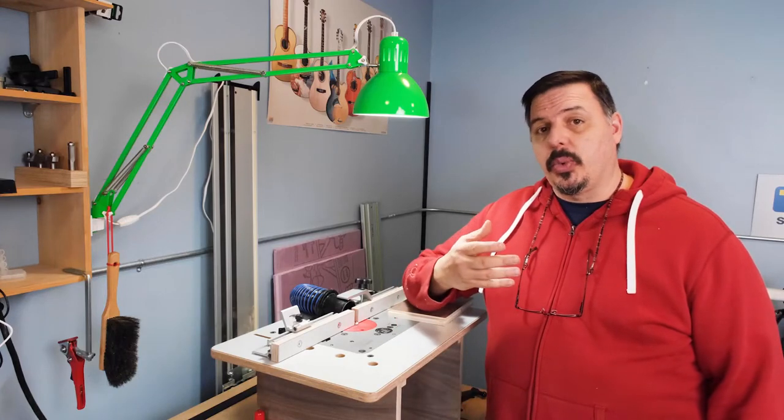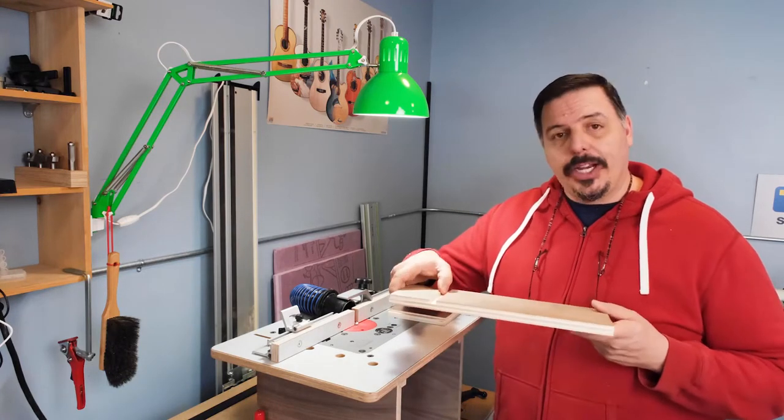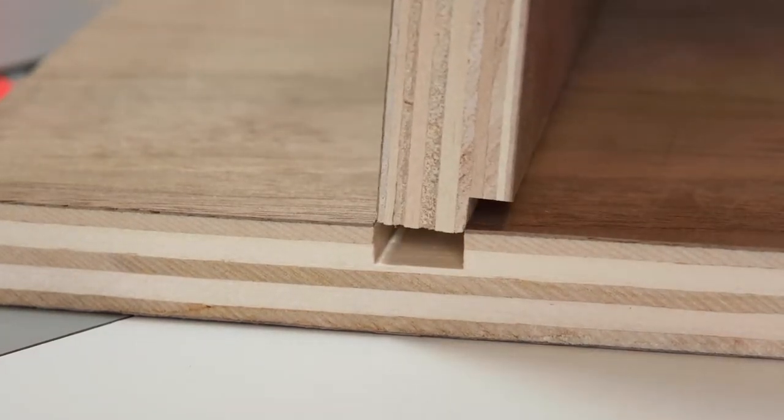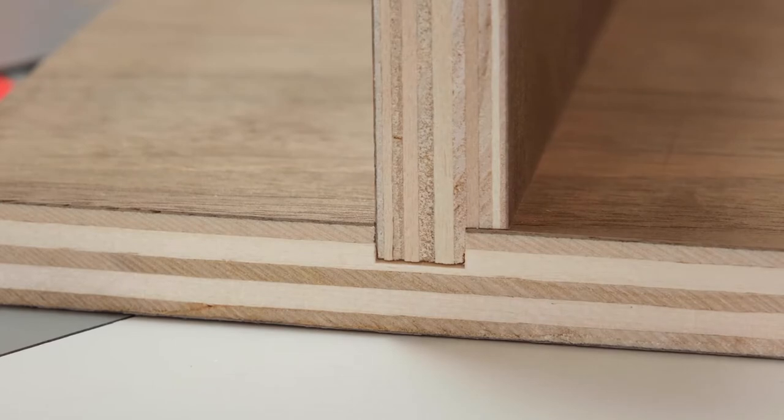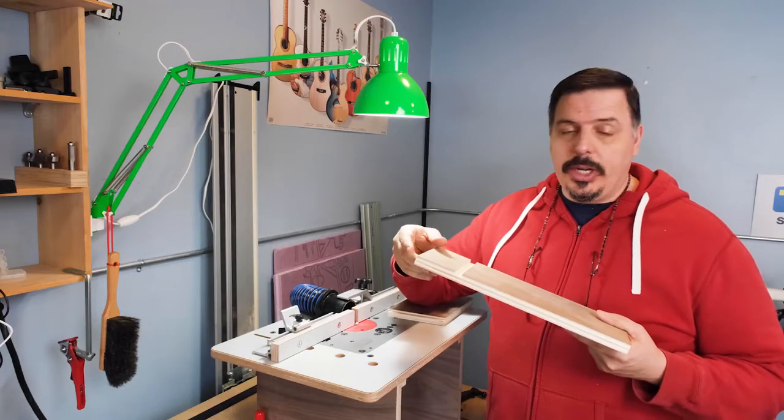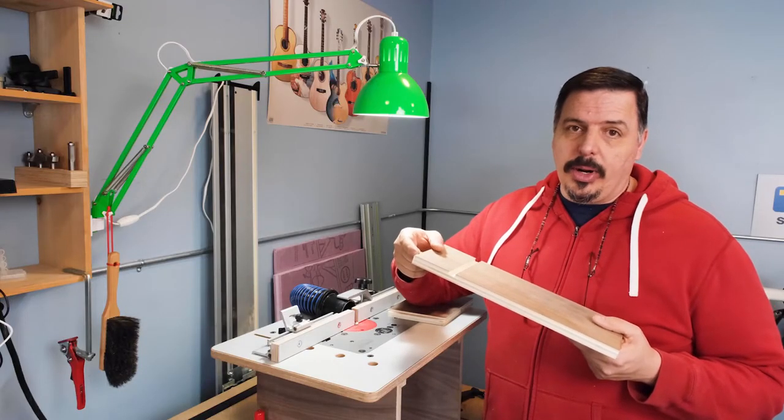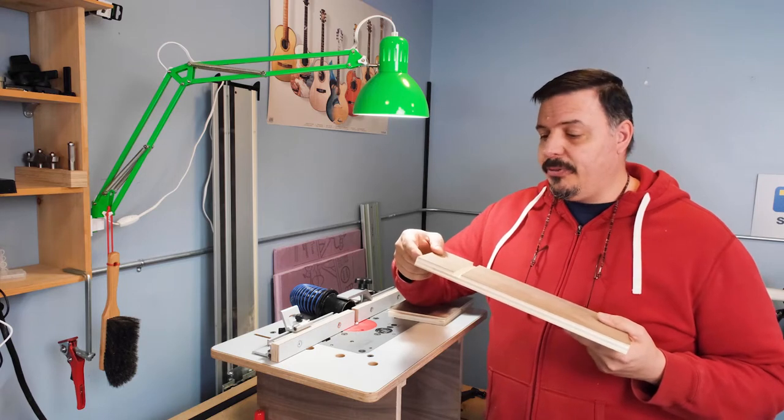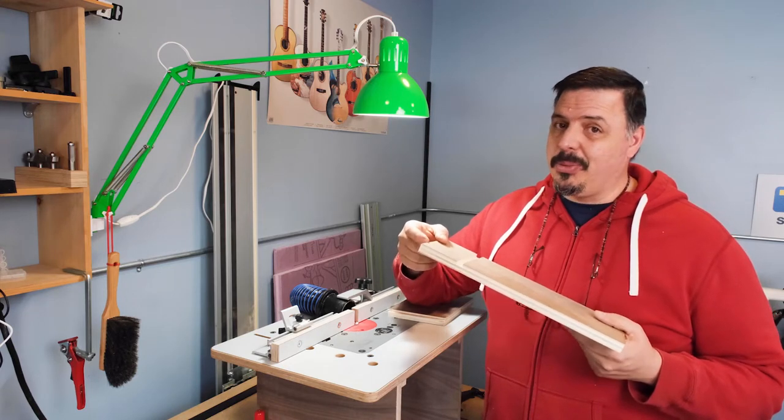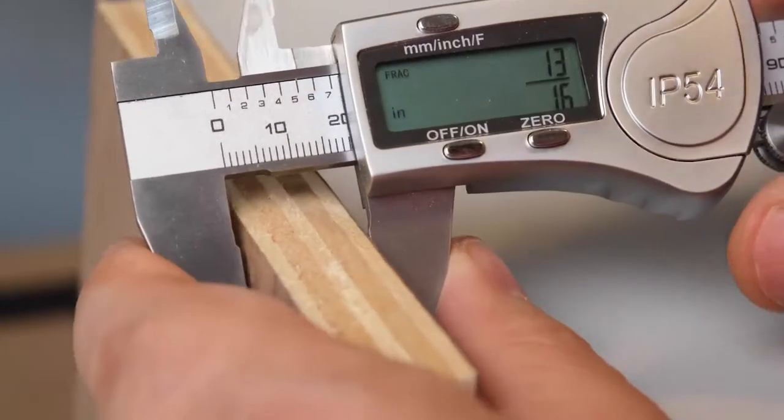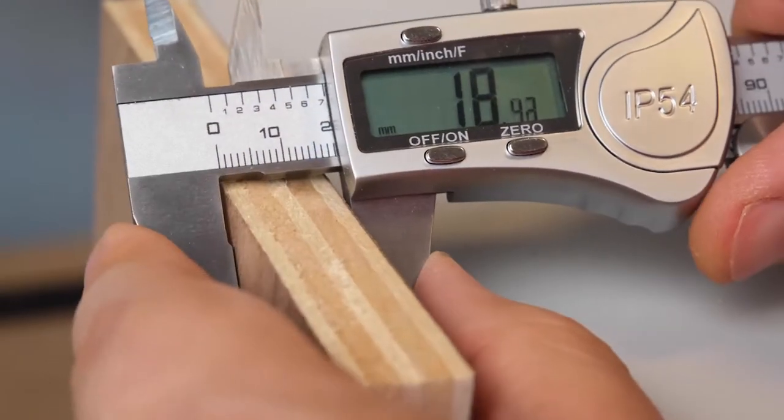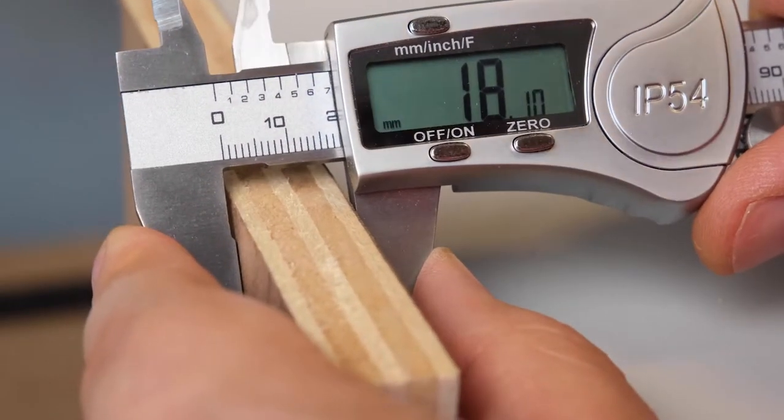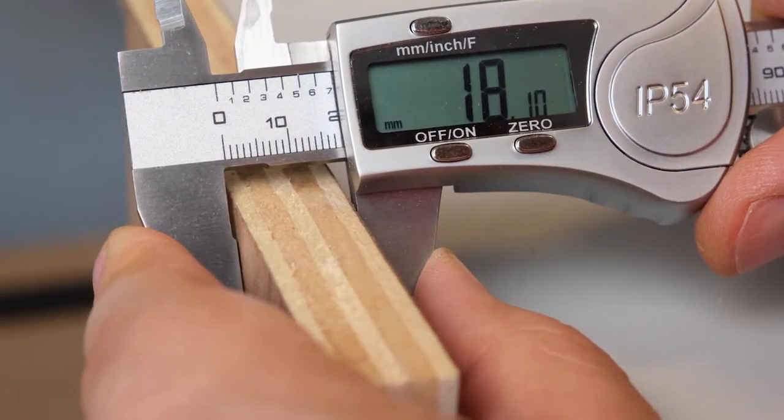One of the things that woodworkers really struggle with is getting good dados in plywood. Plywood, especially cabinet grade plywood, is difficult sometimes because we never know if it's in metric or in imperial measurements. If it says three quarters, it's probably not three quarters. So some people say, well, just use 23/32nds, but then 23/32nds isn't really accurate because it's supposed to be a metric measurement. So what actually is it? 19/18? Hard to say.